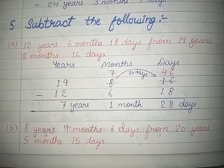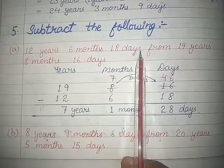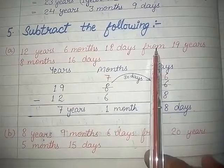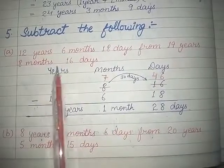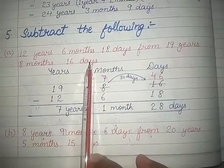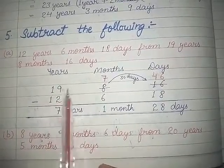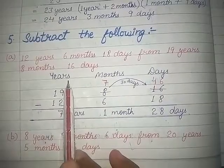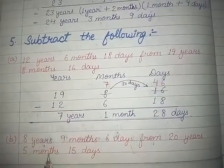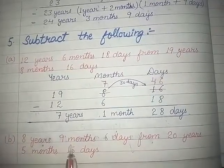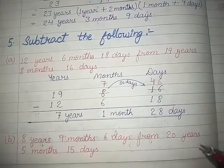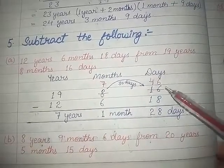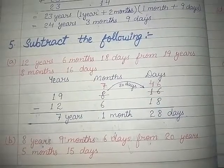Next hum karenge subtraction. Yahan aapko units given hain — year, month and days — aur aapne karni hai subtraction. First statement mein given hai: 12 years, 6 months and 18 days, from 19 years, 8 months and 16 days. 'From' likha hai, that means second wali term badi hai, toh isko aap upar likhenge: 19 years, 8 months and 16 days. But days wale column mein 16 mein se 18 ko subtract nahi kar sakte hain, toh leni padegi carry.